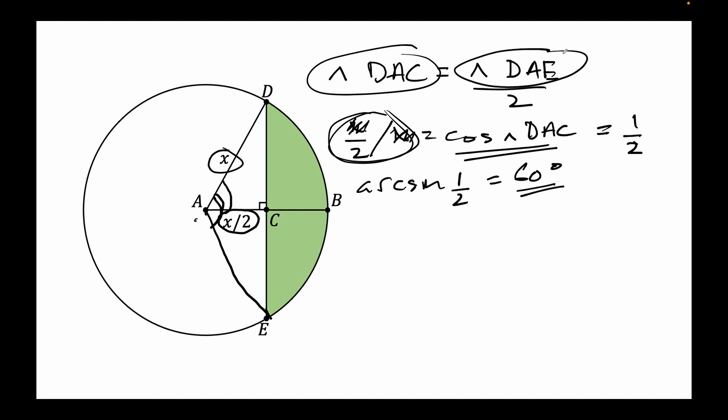Remember that we want DAE, so we need to multiply this by 2. So the angle DAE equals 120 degrees, which is one third of 360 degrees. So the segment ADBE is one third of the area of the circle. One third of the area of the circle is X squared pi divided by 3.